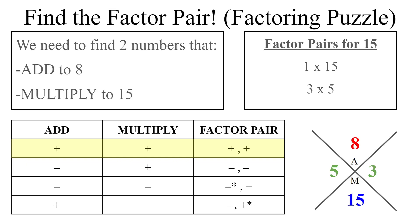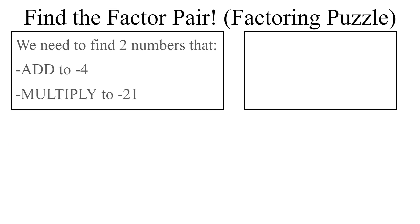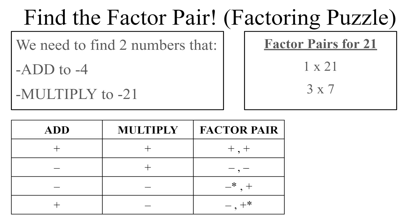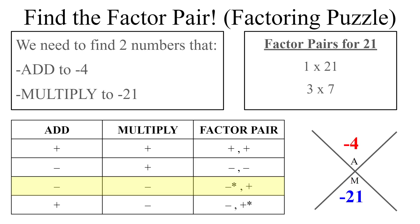Let's do another example: find two numbers that add to negative 4 and multiply to negative 21. Factor pairs for 21 are 1×21 and 3×7. Both add and multiply are negative, so we have one negative and one positive — the signs differ, so they'll fight each other. I'm looking for a factor pair with a difference of 4. Three times 7 has a difference of 4, so it works. We make the smaller number positive and the bigger number negative: negative 7 and 3.